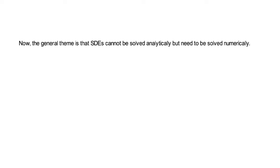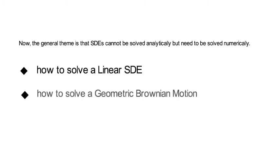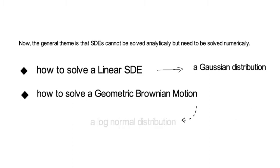In this sequence we talk about two exceptions. That is, we talk about how to solve a linear SDE and how to solve a geometric Brownian motion. The linear SDE induces a Gaussian distribution. The geometric Brownian motion induces a log-normal distribution.